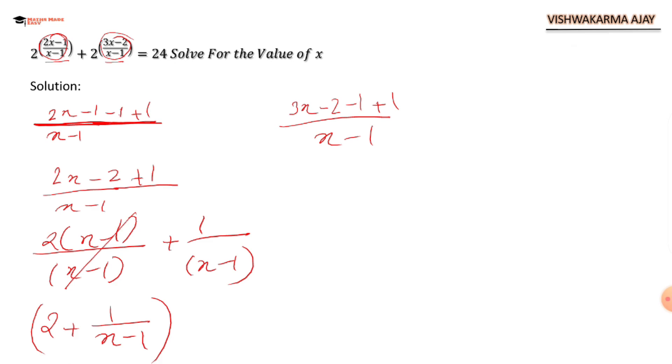The reason why I did this is minus 2 minus 1 is going to give me minus 3. So 3x minus 3 plus 1 upon (x minus 1). Now we will be taking 3 common: 3 times (x minus 1) upon (x minus 1) plus 1 upon (x minus 1). You can cancel this. So we have 3 plus 1 upon (x minus 1). Again this is to the power 2.